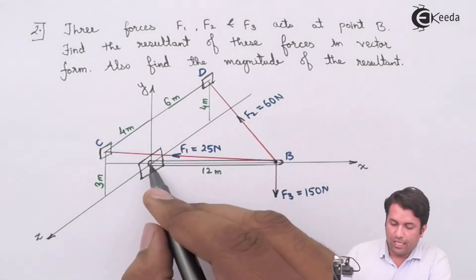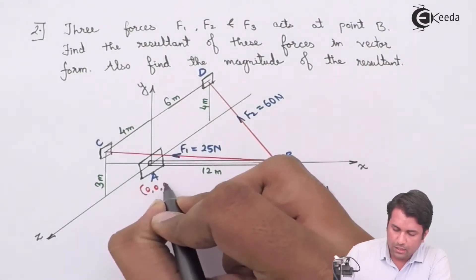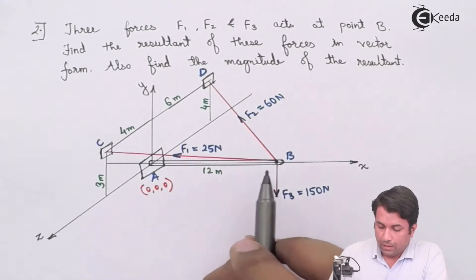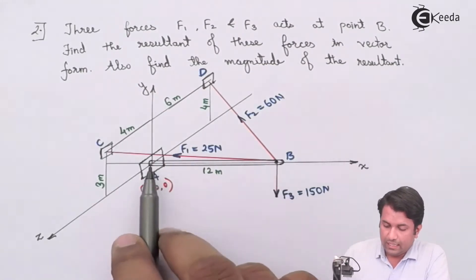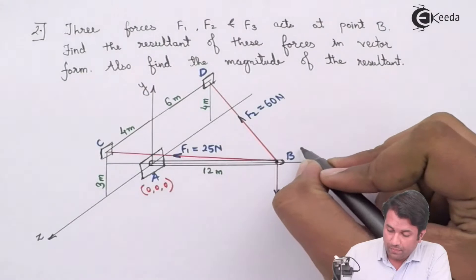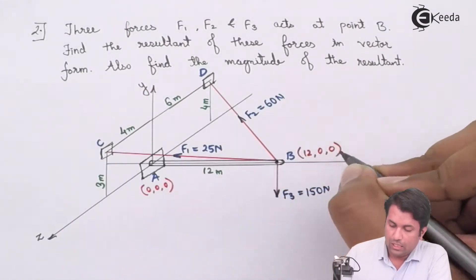Now the coordinate for A, since it is at the origin, will be (0,0,0). For B, it is only along the X axis, so Y and Z coordinates will be 0, giving us (12,0,0).